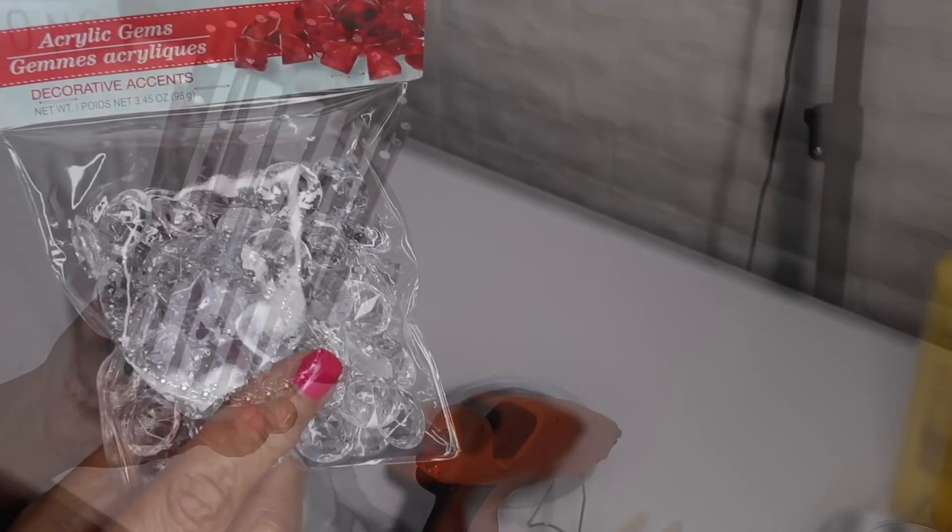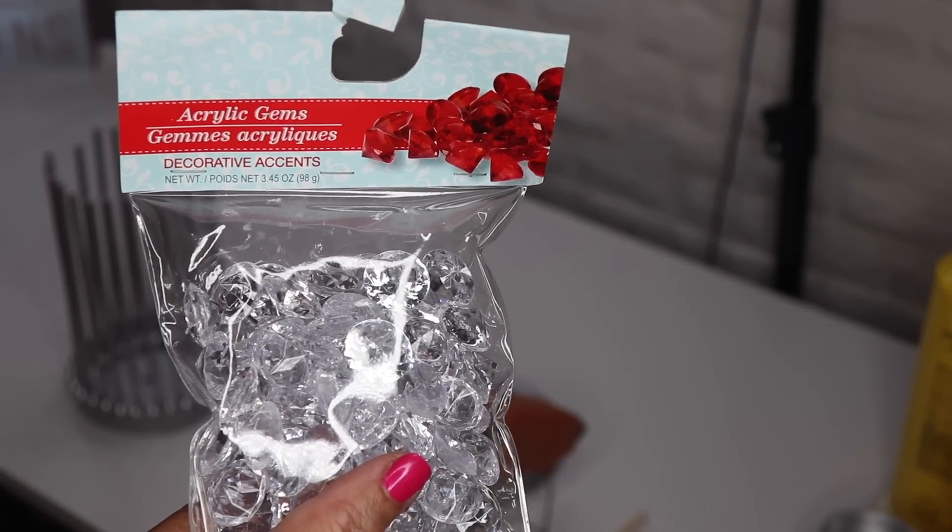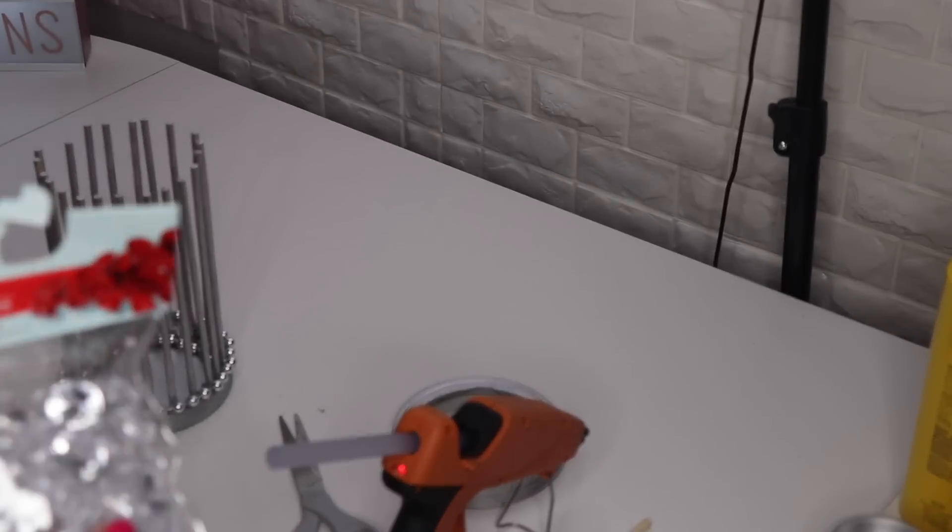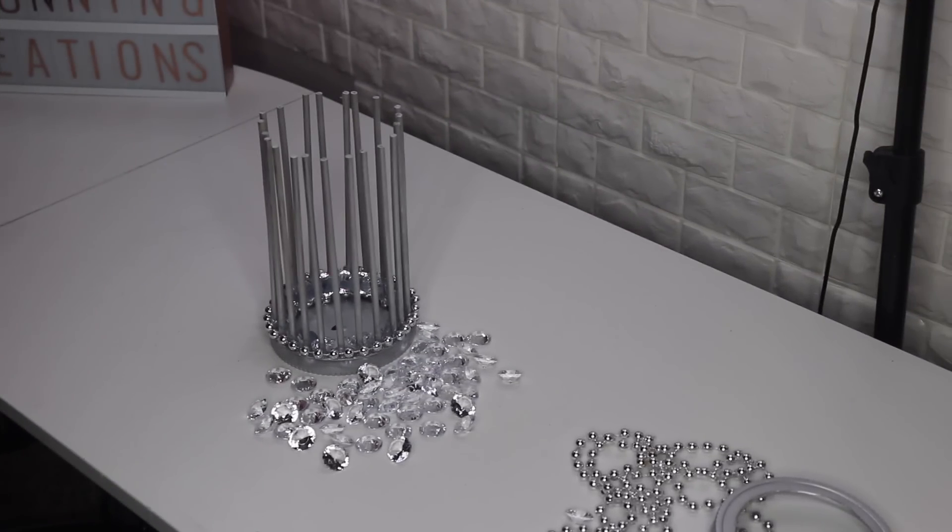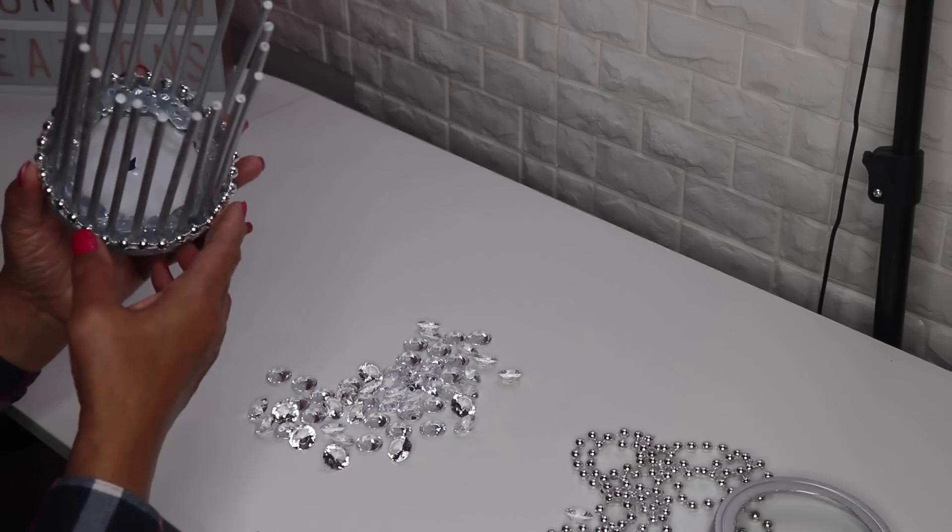Next up I have some of these Dollar Tree gems and I'm going to glue these right around the inside of the base. The reason I'm doing that is because I still see some hot glue and these gems will make it even more blingy. I'll continue to add those off camera. I'm back and this is the very next day. My battery died so I had to stop. Let me show you what the inside looks like now.